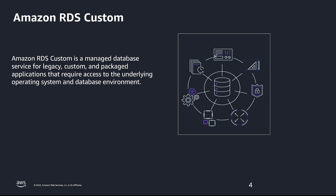Amazon RDS Custom is a managed database service for commercial database engines like Oracle and SQL Server. This service automates database administration tasks and operations while making it possible for a database administrator to access and customize the database environment and operating system. With RDS Custom, customers can customize to meet the requirements of legacy, custom, and packaged applications. RDS Custom provides a managed experience including automated provisioning, backup, point-in-time recovery, and gives customers the flexibility to bring their own media and patches and apply one-off patches at their own pace.